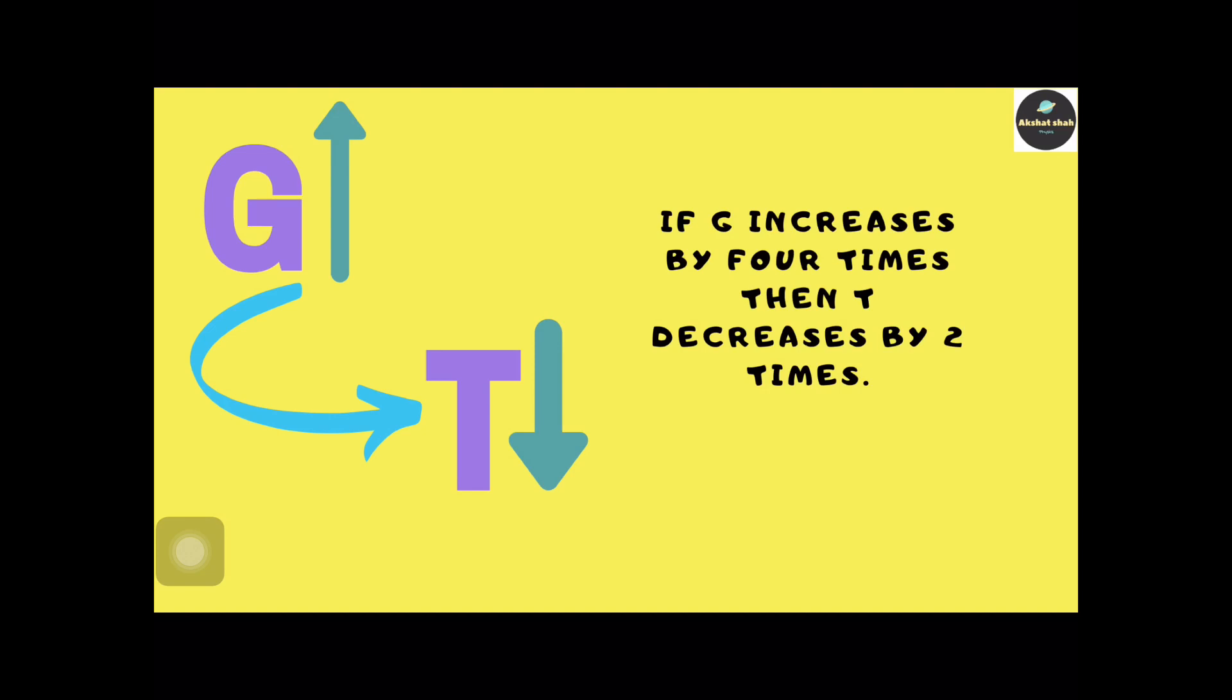If g increases by 4 times, then T decreases by 2 times.